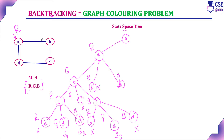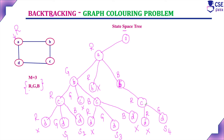Now assign blue to vertex B (with A=red). Check vertex C: red is valid. With C=red, check D: red is a dead end since C is red and adjacent. Green for D is valid — this is Solution 4 (A=red, B=blue, C=red, D=green). Blue for D is also valid — this is Solution 5 (A=red, B=blue, C=red, D=blue). All three choices for D under C=red have been checked; backtrack.